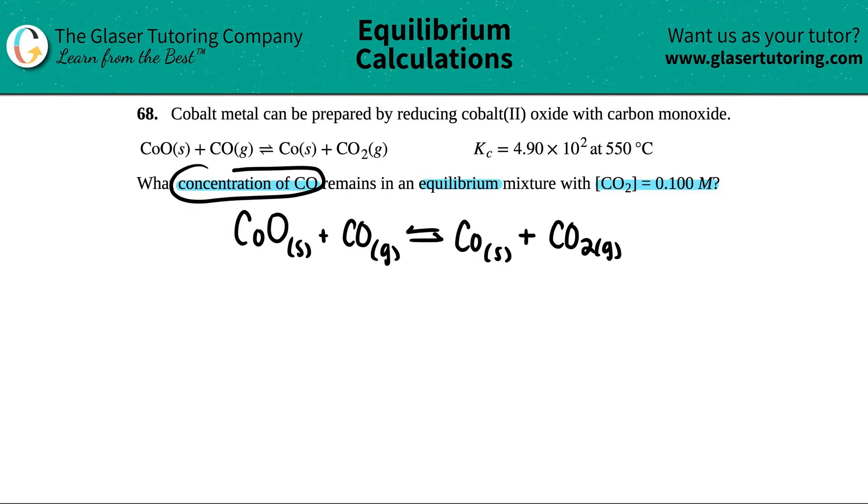They're asking for what concentration of CO - so that's this. We're looking for a concentration of CO. Remember, concentration is just a fancy way of saying molarity. All that we know is that we have a molarity of CO2. These brackets mean molarity as well, and they give me capital M so it's molarity for CO2. So I know CO2 is 0.100 molarity.